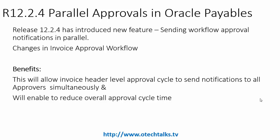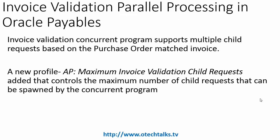Another change is done in invoice validation parallel processing. A new profile option is introduced — the name of that profile option is 'AP Maximum Invoice Validation Child Requests' — which controls the maximum number of child requests that can be spawned by the concurrent program.